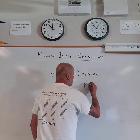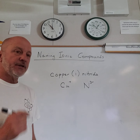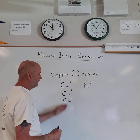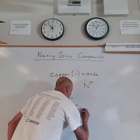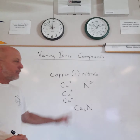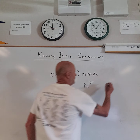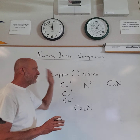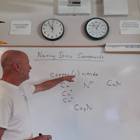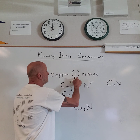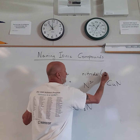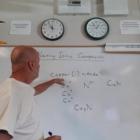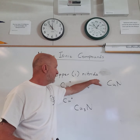Copper(I) nitride: copper(I) means Cu⁺. Nitride — nitrogen is in the column with five valence electrons; it adds three electrons to fill its outer shell, forming the nitride ion, N³⁻. So I need three coppers: three single-plus gives a total of three-plus, which cancels the three-minus. The formula is Cu₃N. A very common mistake is thinking the Roman numeral tells you how many coppers there are. No — it tells you the charge of the metal ion. The Roman numeral always goes right after the metal name, never at the end.